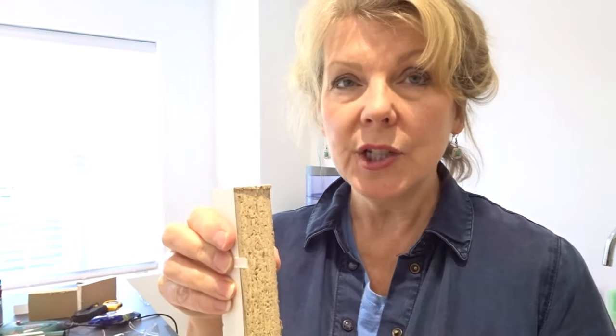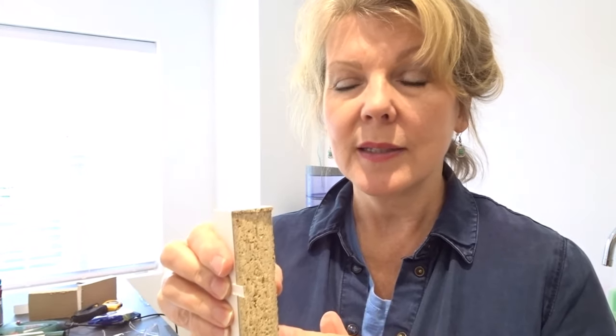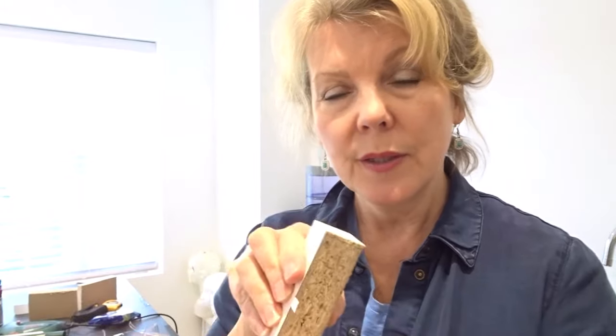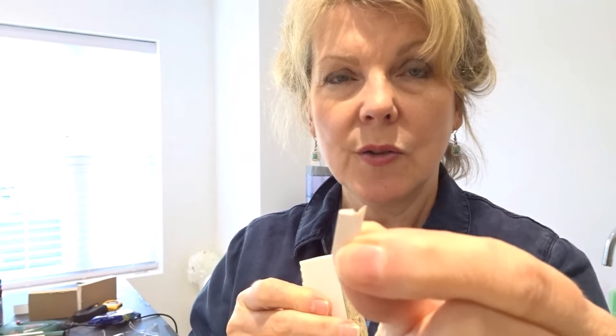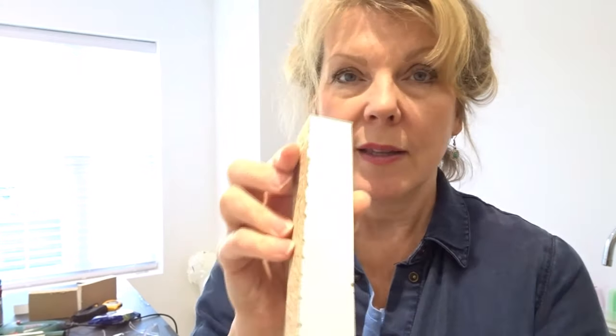Now, for some reason which I do not understand, jigsaws, which is what I'm going to use to cut this, cut on the upstroke. So if you are cutting it with the right side on top, as your blade goes along it will lift like this and snap unevenly the laminate which is on the top, and that's why you end up with that very snaggy edge.